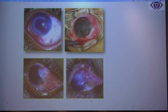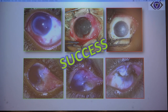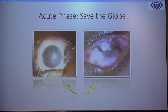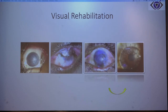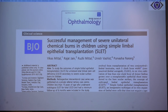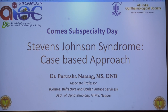Once the surface has been stabilized in the acute phase and the globe is saved, the patient is ready for the next step of ocular surface reconstruction in the chronic phases and later visual rehabilitation. All of us should strive for good acute stage management to give a good prognosis to the patient in the later phases. This has been published in an article on management in the chronic phases.